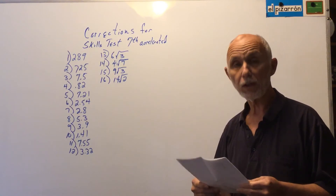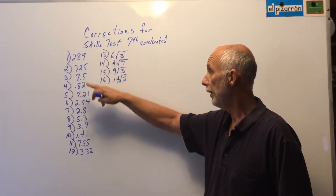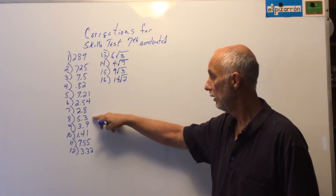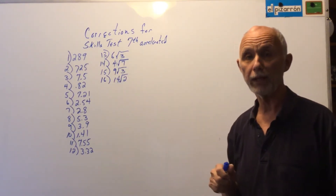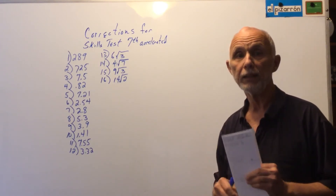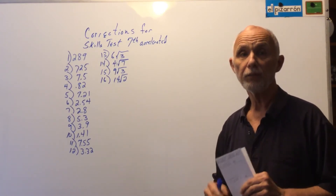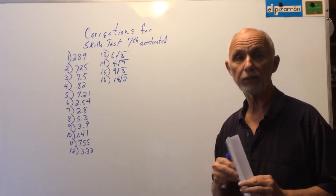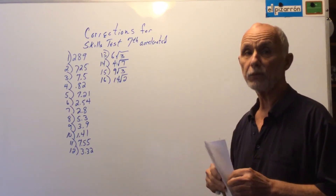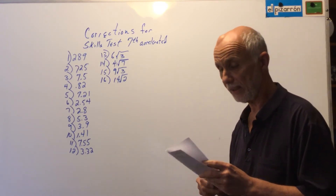Right now I'm going to go over one of each kind: using the algorithm to find the square root of a large number, using the algorithm to find the square root of a decimal, using the algorithm to round the quotient for a non-perfect square, and writing in simplest radical form for a non-perfect square. If you need help on any others, send me an email and I'll either make another video or do that particular problem and send you a copy. I'm going to start with problems that James Weimer asked about.